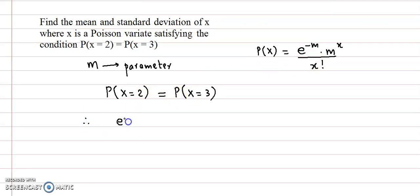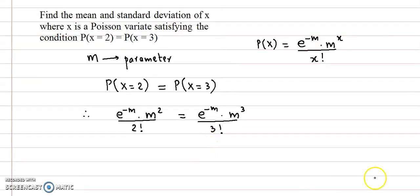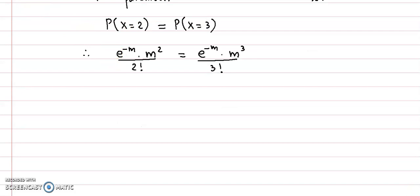e raised to minus m into m raised to x, x is 2 upon 2 factorial. Right side: e raised to minus m into m raised to x, x is 3 upon 3 factorial. e raised to minus m, this factor cancels out.